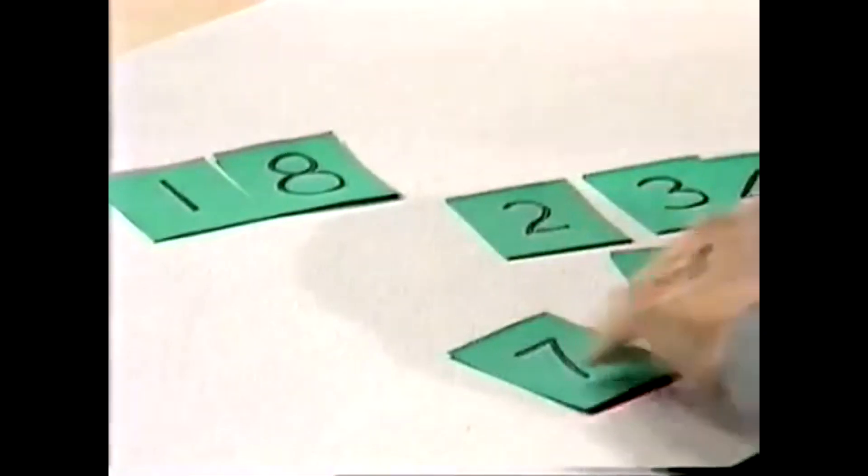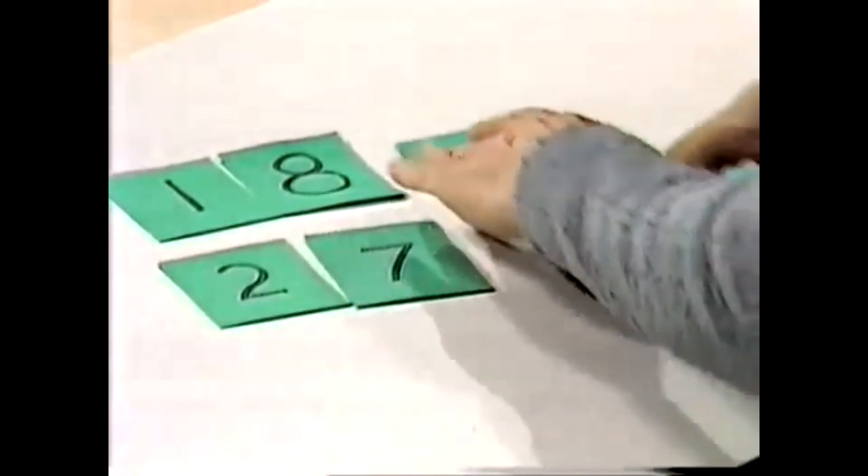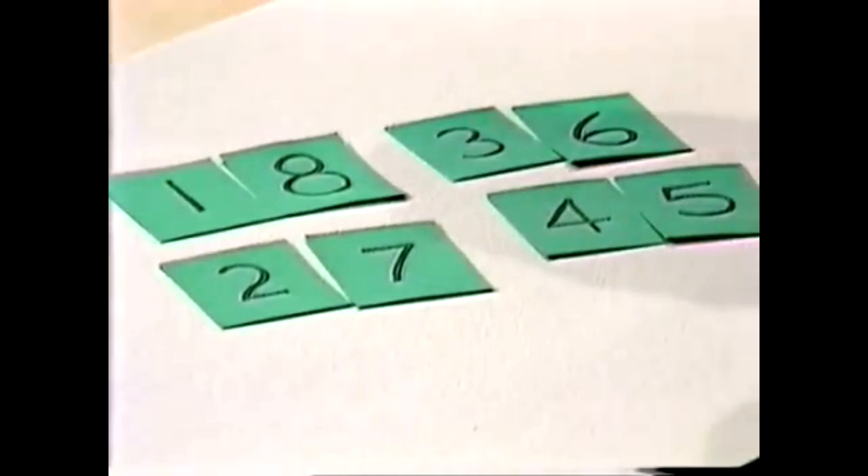One and eight makes what? Nine. That's correct. Two and seven? Nine. Three and six makes nine. Four and five makes nine. You've got four pairs of nine.